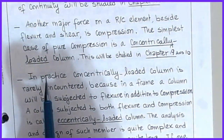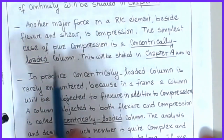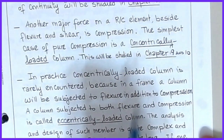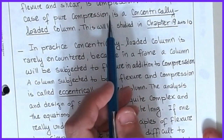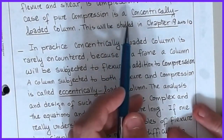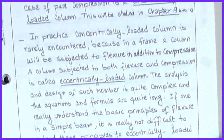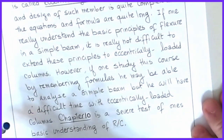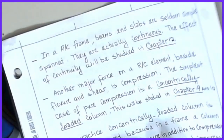Another major force besides flexure and shear is obviously compression, which applies to columns. We're going to start off with concentrically loaded columns, studied in chapters 9 and 10. But columns are often affected not only by axial load, but also by moments in one or two directions. We need to be able to handle eccentrically loaded columns using chapter 10, and we'll be making interaction diagrams to establish our understanding of column behavior.